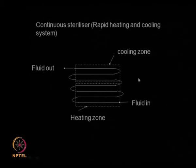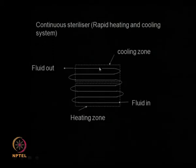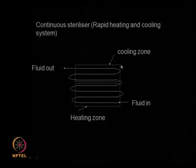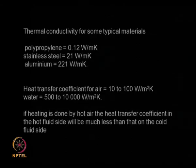Looking at a continuous sterilizer: a fluid comes in, gets heated up rapidly, then is cooled rapidly. Rapid heating sterilizes the material — killing all bacteria. Rapid cooling brings the temperature down quickly so the material does not get deactivated, especially good for biological products which are thermally labile. Thermal conductivities: polypropylene is about 0.12 W/(m·K), stainless steel is 21 W/(m·K) — a big jump since it is a metal with very high thermal conductivity. Aluminum is again very high. Polypropylene is the worst because the heat conductivity is so low that it offers considerable resistance.